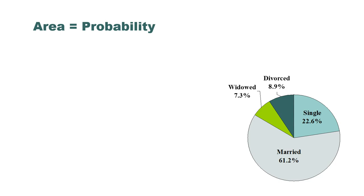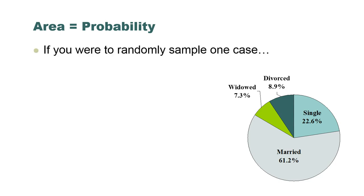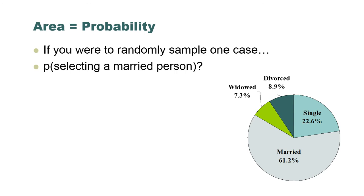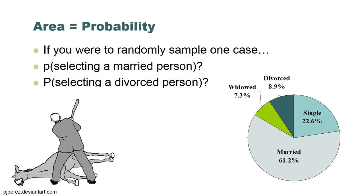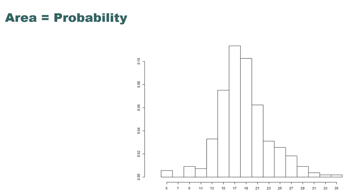Another example: pie charts. If you were to randomly sample one case from this dataset, what's the probability of selecting a married person? It's 61.2%, because proportion of observations is probability when you frame the question as randomly sampling one case. A divorced person is 8.9%, a widowed person is 7.3%.